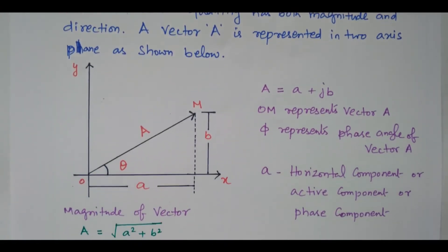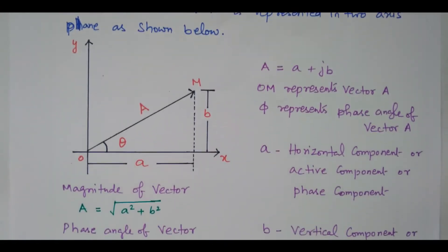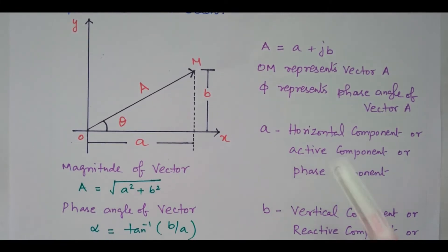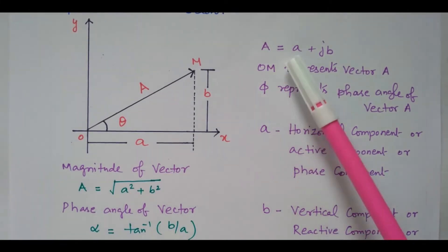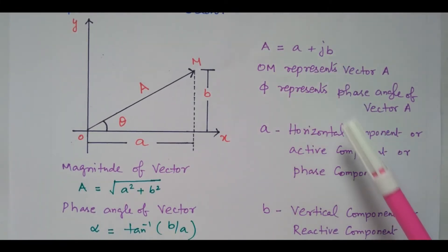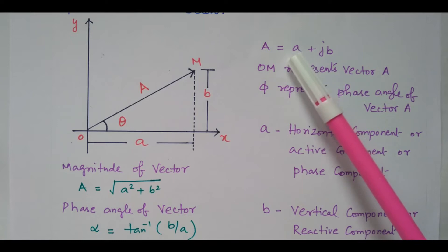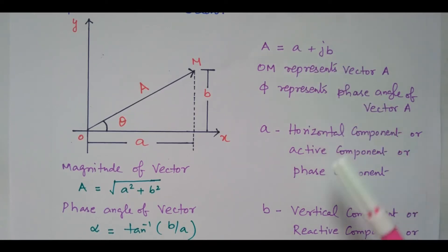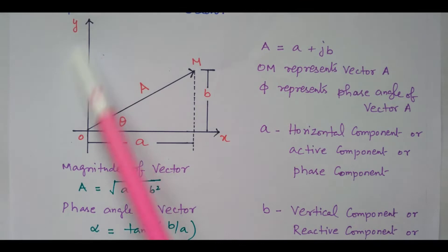This is nothing but a complex number. Consider A equal to a plus Jb. What is A? A is the real term, B is the imaginary term. So that is represented in this graph.